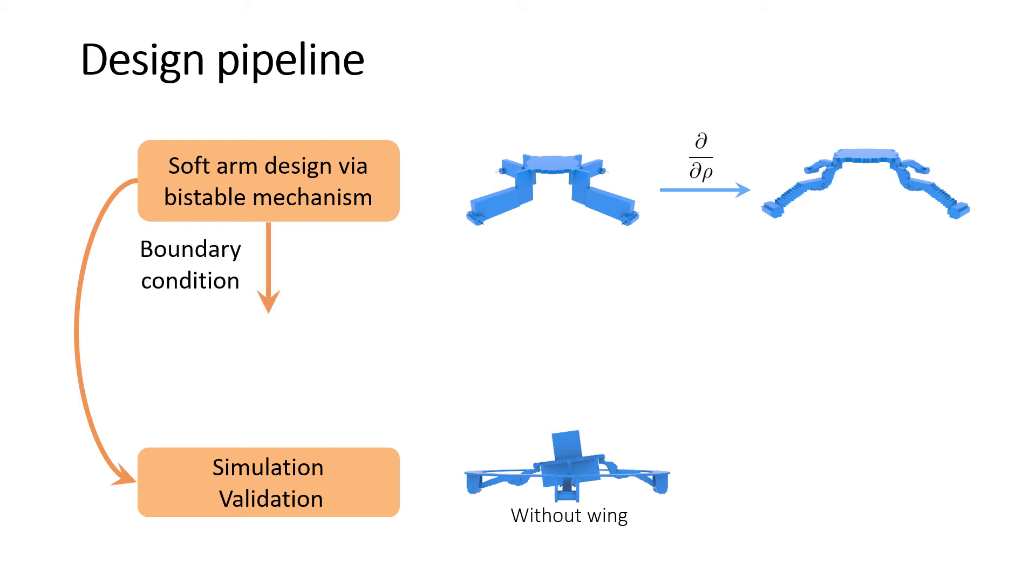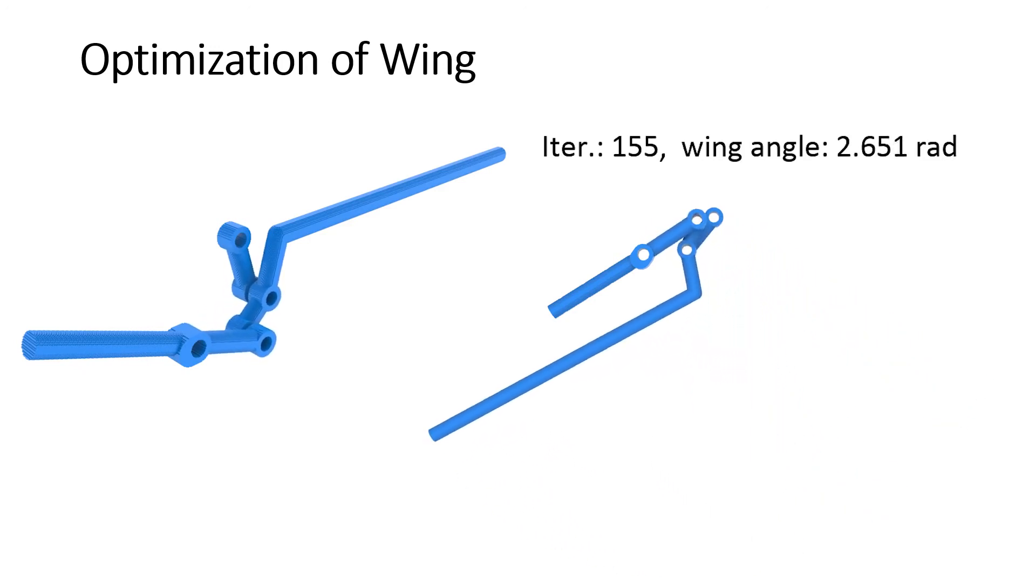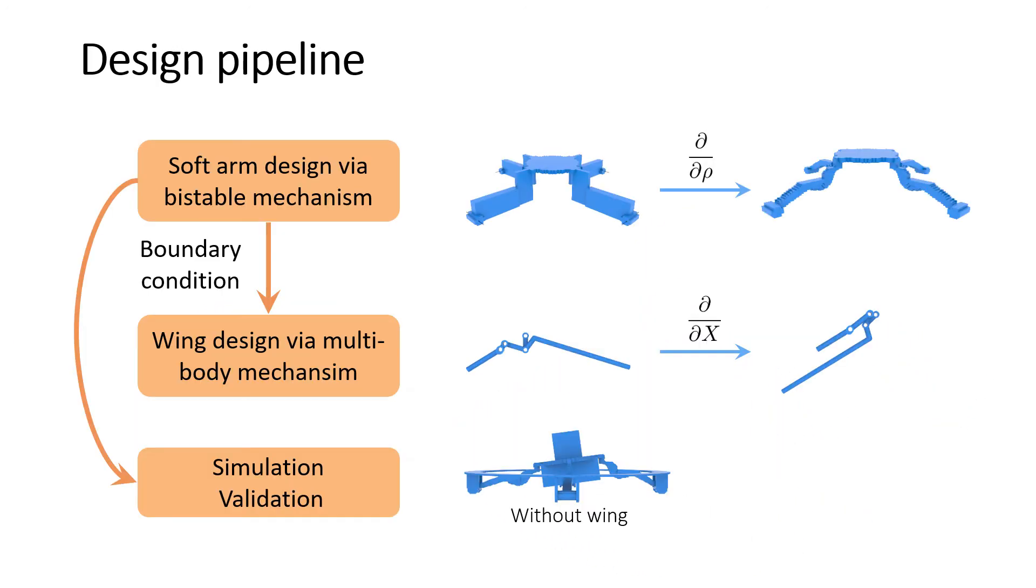The rotations of the joints of the designed arms act as boundary conditions for the wing design. We reuse the differentiable equilibrium solver to optimize a multi-body rigid mechanism. The optimization procedure of joint locations and the rotation angle evolution are visualized here. With all parts designed, we test the full HAV system with dynamic forward simulations again and proceed to fabrication.